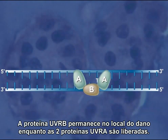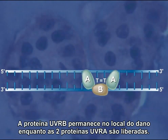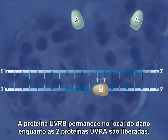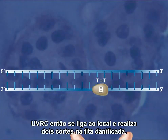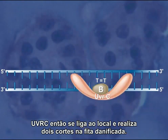The UVR-B protein remains at the damaged site, while the two UVR-A proteins are released. UVR-C then binds to the site and makes two cuts on the damaged strand.